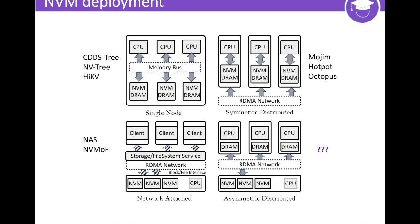Network-attached storage is designed based on the principle of decoupling storage and computation. Compared to the NVM architecture, the key distinction is that NAS heavily relies on file system service in the storage node. It is based on the block access interface, so read-write amplification is unavoidable.